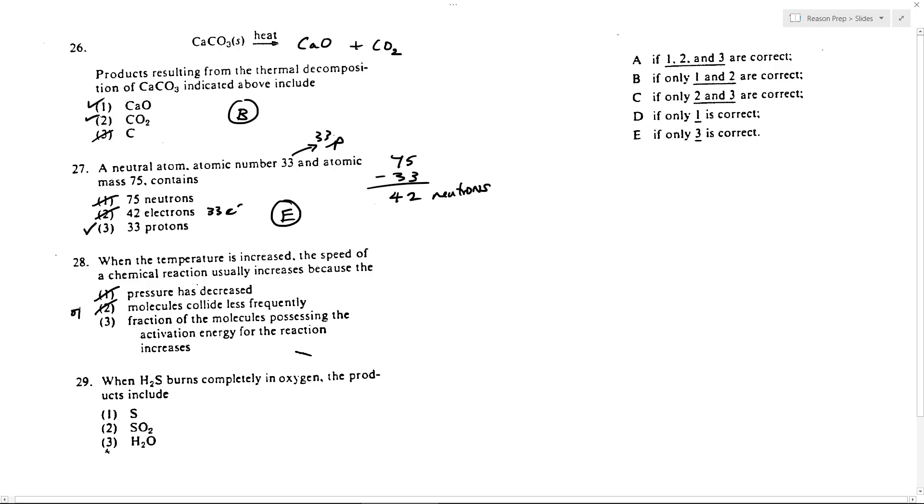So two is kind of the opposite of what it should be. If it said why does the speed increase because molecules collide more frequently, that would be good. Fraction of the molecules possessing the activation energy for the reaction increases. Exactly.